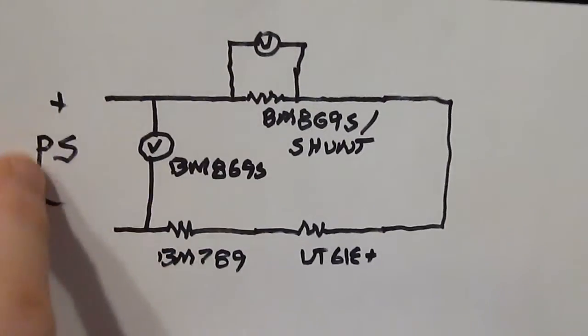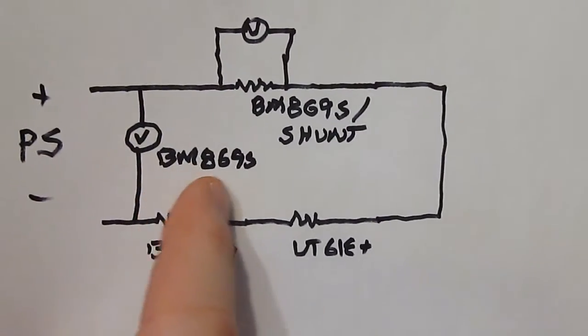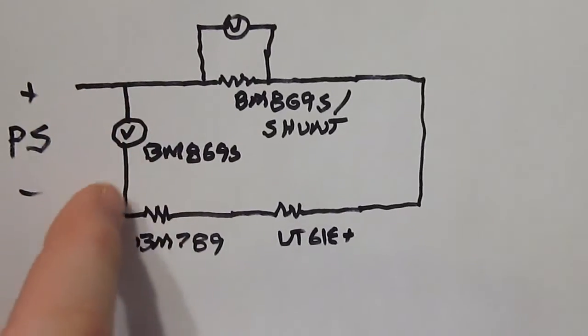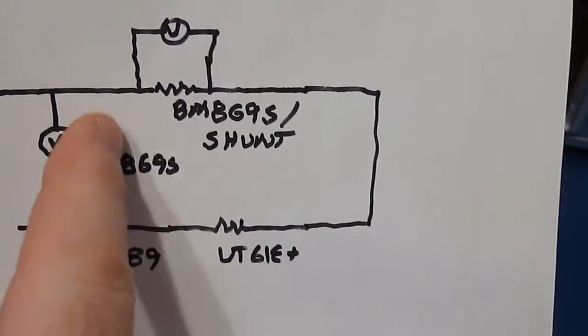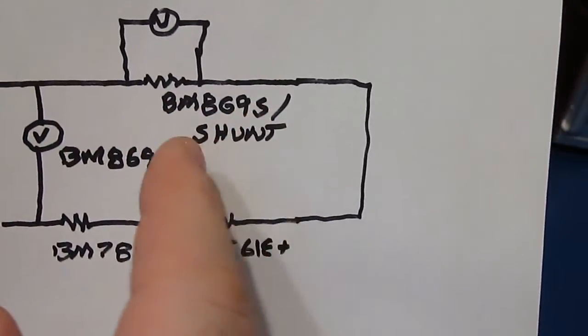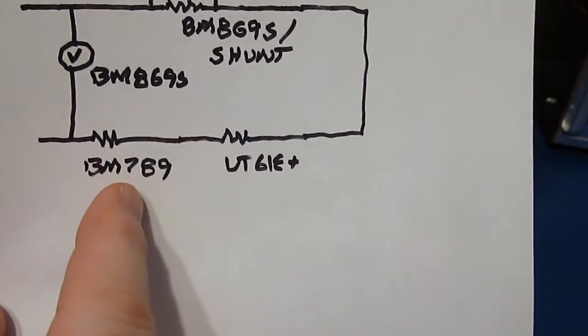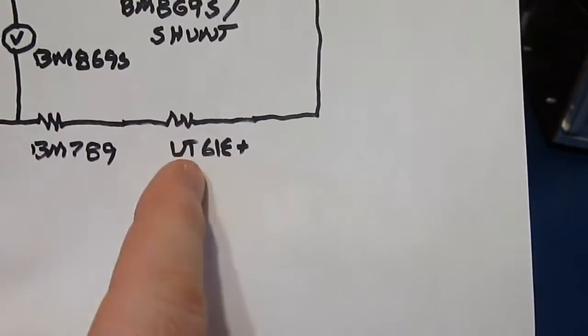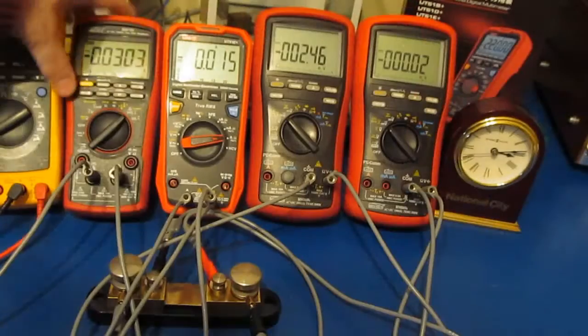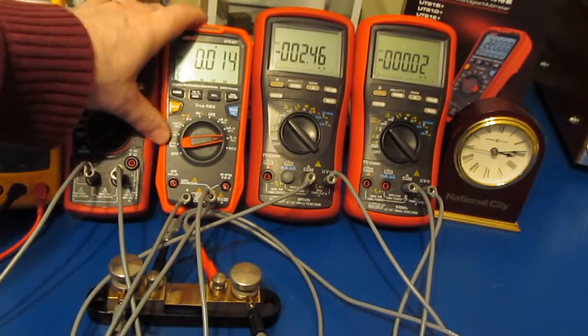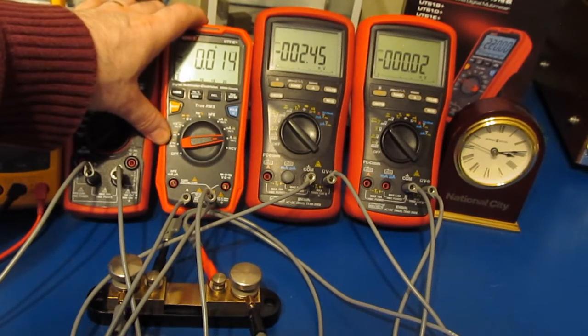This is going to be our test setup. I have my bench power supply, a Breiman BM 869s looking across that power supply, and a second BM 869s that's sitting across the shunt. That's in series with BM 789 and the UT 61E plus.